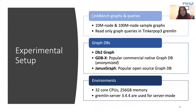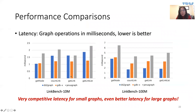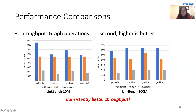Although we didn't design DB2 Graph as yet another graph database, we compared it with two existing graph databases: GDBX, a popular commercial graph database with its name anonymized, and JanusGraph, a popular open-source graph database, using LinkBench graphs and queries. Looking at query latency, JanusGraph is always the slowest. For the smaller LinkBench 10M dataset, GDBX performs best due to its aggressive caching fitting the data in memory. However, on the larger LinkBench 100M dataset, DB2 Graph beats GDBX by up to 1.7x. For throughput, DB2 Graph is the clear winner in all cases, because the underlying DB2 engine is extremely good at handling concurrent queries.